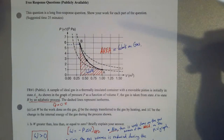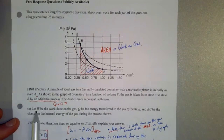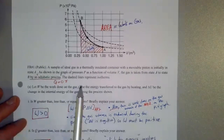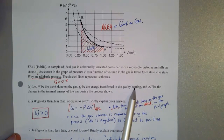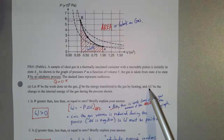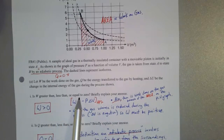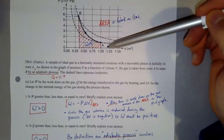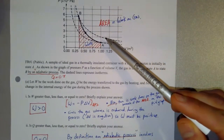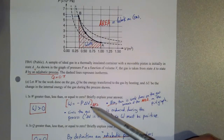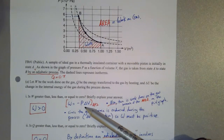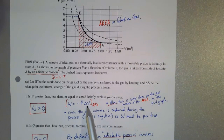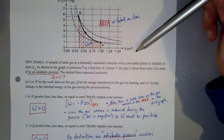Let W be the work done on the gas, Q be the energy transferred to the gas by heating through conduction, convection, or radiation, and Delta U be the change in internal energy during the process. The first question is: is work greater than, less than, or equal to zero? The equation for work is negative P times Delta V. On a pressure versus volume graph, the product of pressure and change in volume is just the area under the curve.